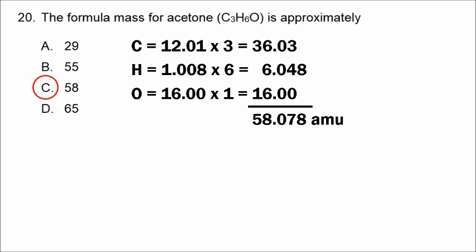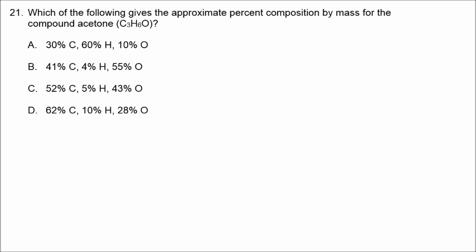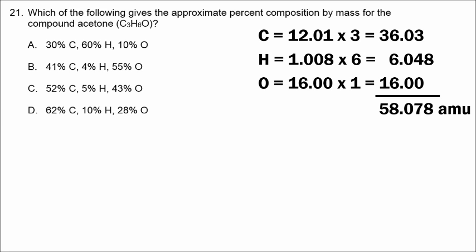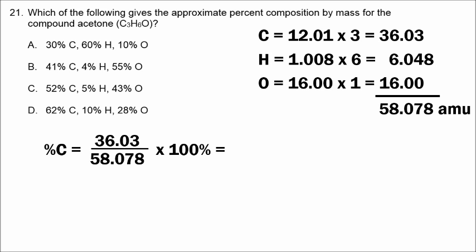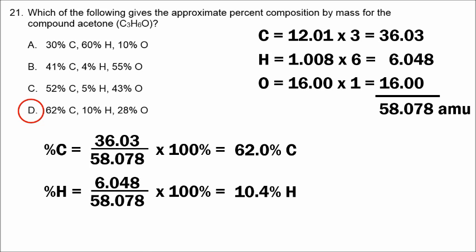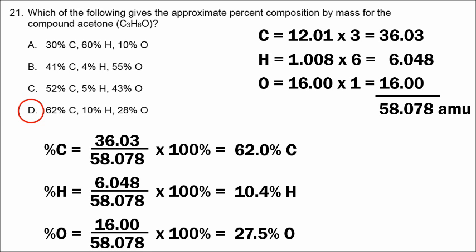Continuing with this data for number twenty-one, we calculate the percent composition of acetone. The percentage of carbon equals 36.03 divided by 58.078, giving 62%. Hydrogen is 10% and oxygen is 28%, rounding to the nearest whole number. The correct answer is D.